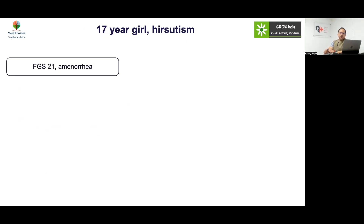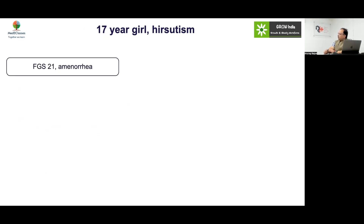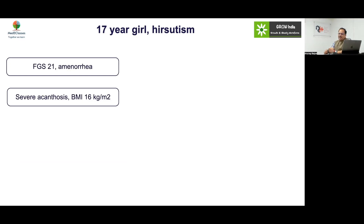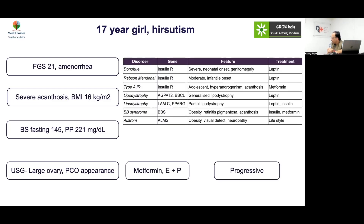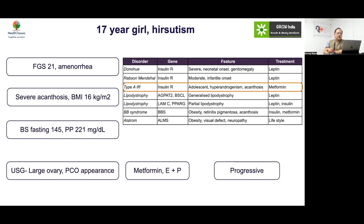Case 17: A 17-year-old girl with hirsutism, FGS score 21, severe acanthosis despite being lean, blood sugars 145 fasting and 221 postprandial, ultrasound showing large ovaries and PCO appearance. This is insulin resistance syndrome — either type A or type B, autoimmune or otherwise. This is a progressive disease that becomes very difficult to manage.